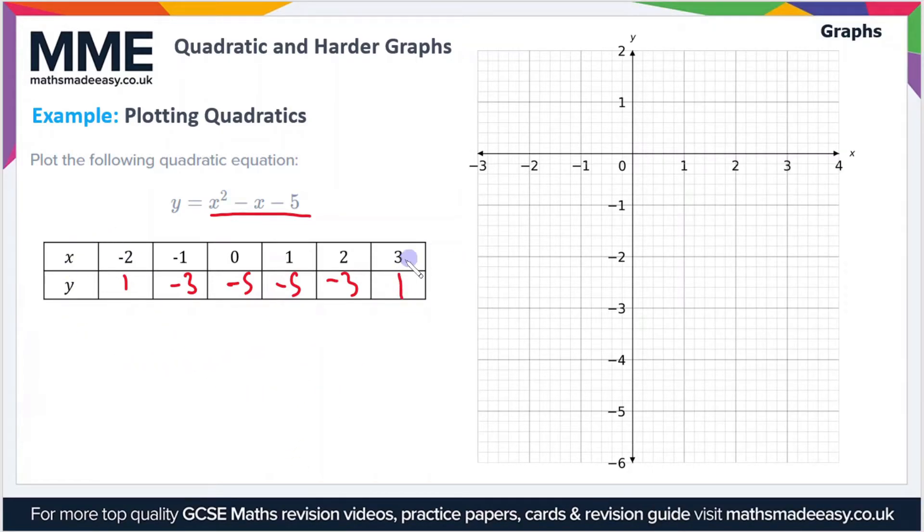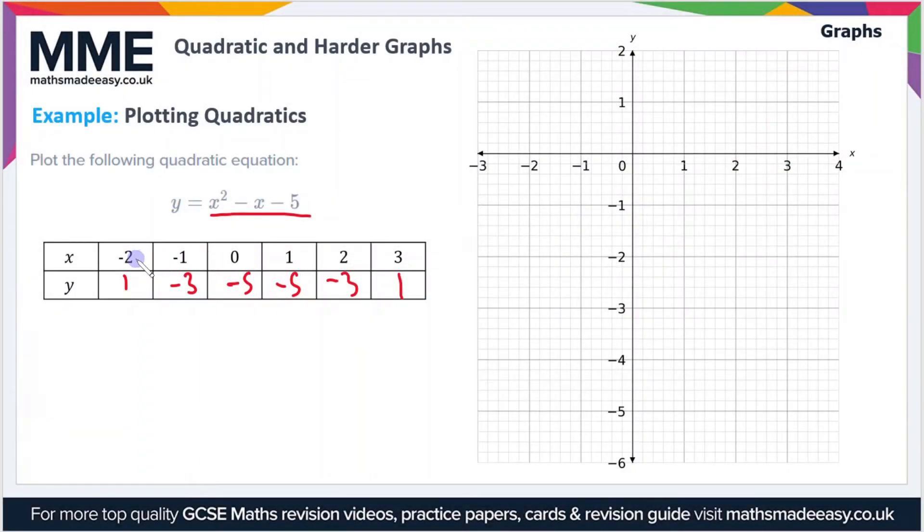So now we just treat these as coordinates and it'll allow us to plot the graph. So the first coordinate then will be minus 2 and 1, so that's here. The next one will be minus 1, minus 3, so we get to minus 1, down to minus 3. Then 0, negative 5, and then 1, negative 5.